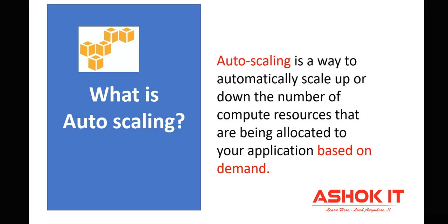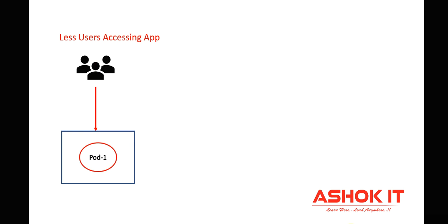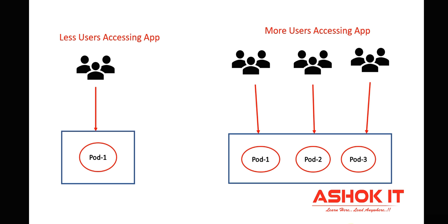Let's take an example to understand autoscaling. My application is deployed in the Kubernetes cluster and it is running inside a pod. Less number of users are accessing our application normally, but tomorrow there is a big billion day offer. More number of users will access our application, and one pod is not sufficient to handle the incoming traffic. So we need to increase the pod count based on incoming traffic. Instead of increasing and decreasing pods manually, we can configure horizontal pod autoscaler to do that automatically based on demand.